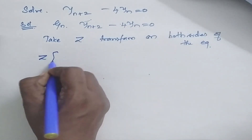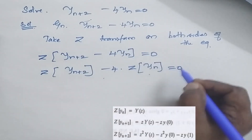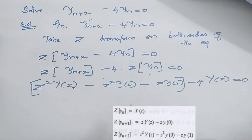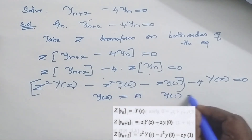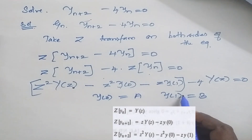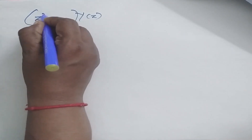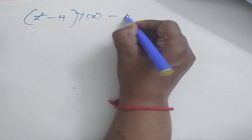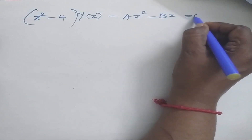I will be getting, on further simplification, the result after substituting formulas for Z{y(n+2)} and Z{y(n)}. Now I don't know y(0) and y(1), so I assume y(0) is equal to a and y(1) is equal to b, and I am going to substitute the values. Combining y(z) terms together, I will be getting (z² minus 4), then minus az² minus bz is equal to 0.